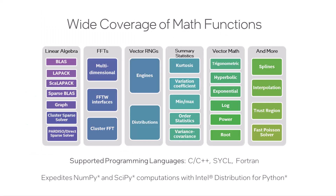OneMKL is a complete library of scientific computing math functions such as BLAS, LAPACK, random number generation, fast Fourier transforms, vector math, and many more. The accelerated math routines reduce development time and improve application performance, allowing you to leverage Intel hardware capabilities for AI, ML, HPC, and data science math solutions.